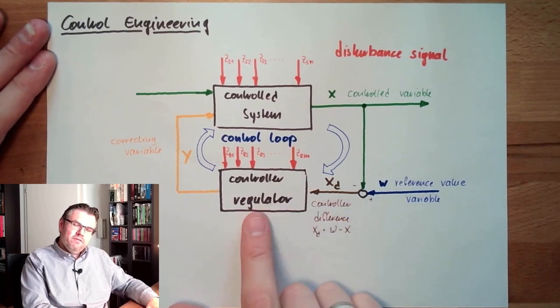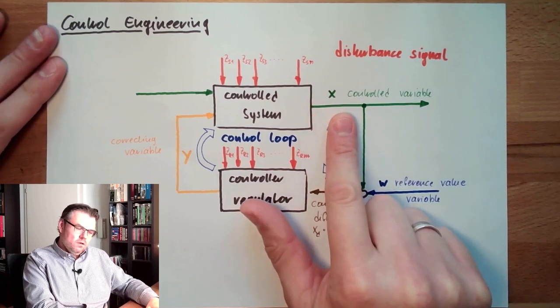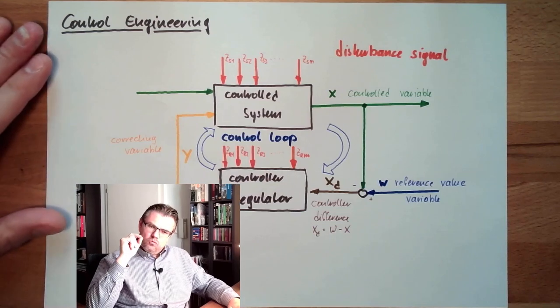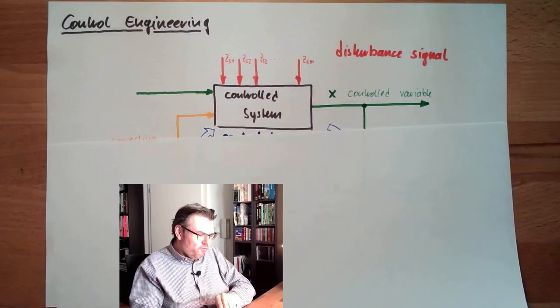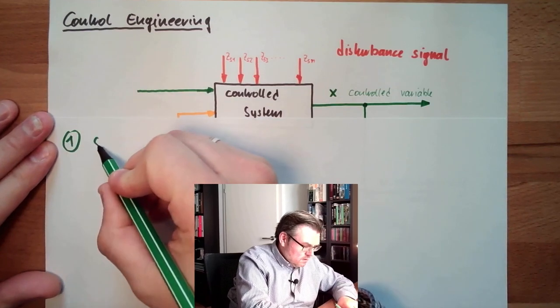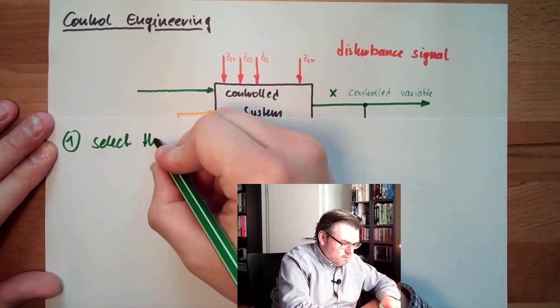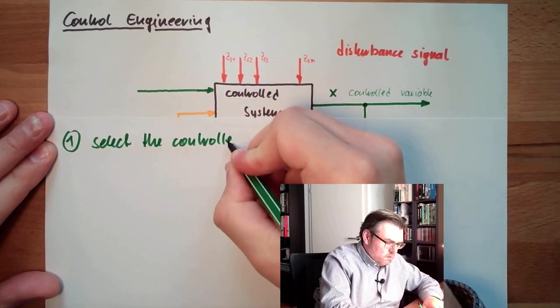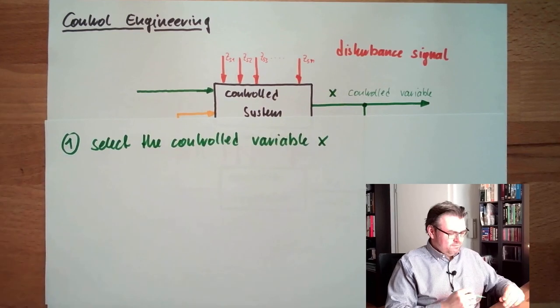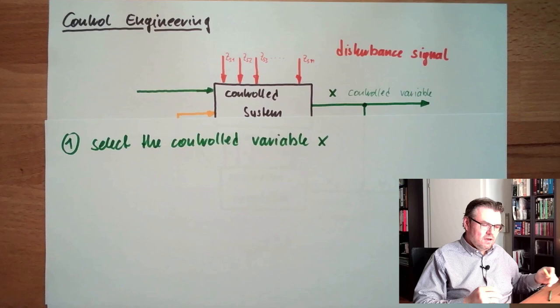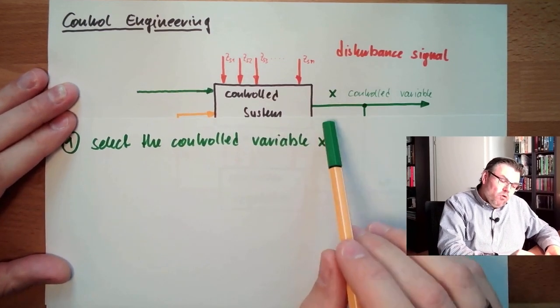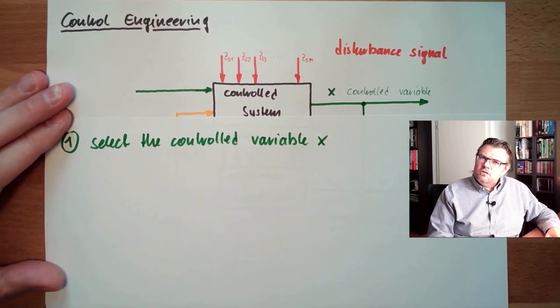The first thing we have to select is the controlled variable x. We have to select which value of our control system we want to control. So first task: select the controlled variable x. Now this sounds a little bit obvious. However, we have to consider some things there. We have to check if by controlling this controlled variable, do we get an advantage of it? Or is it just more expensive?